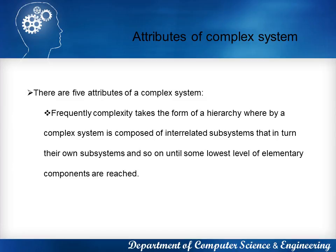Coming to the attributes of complex systems, there are five attributes. The first one is that complexity takes the form of a hierarchy, whereby a complex system is composed of interrelated subsystems that in turn have their own subsystems, and so on, until some lowest level of elementary components is reached.